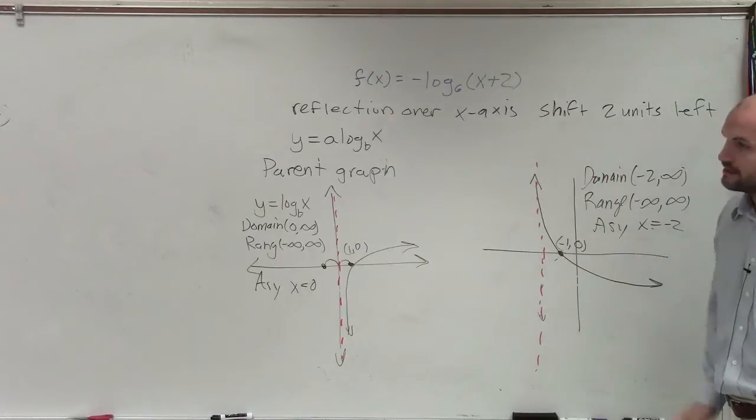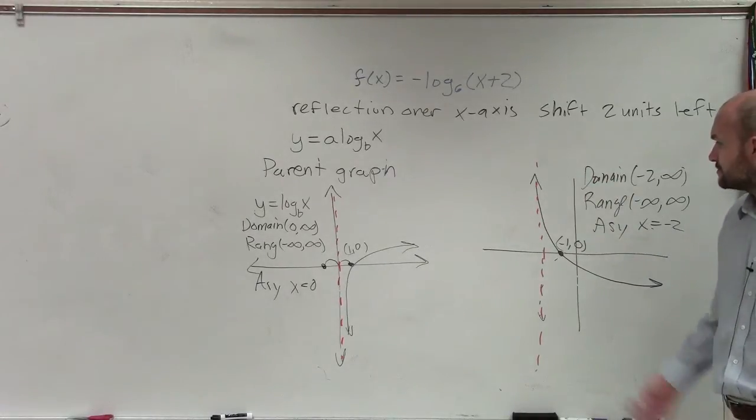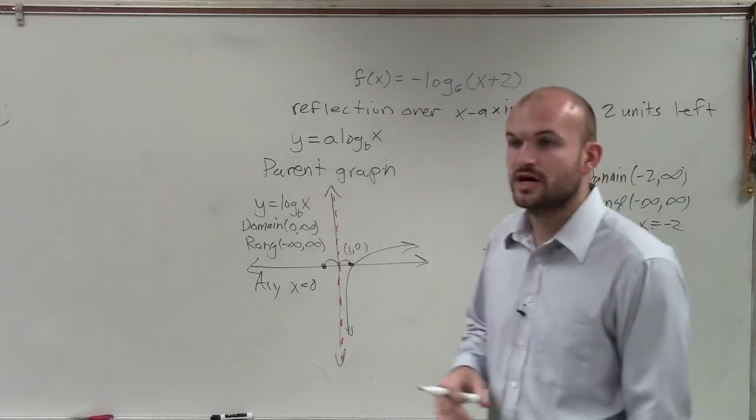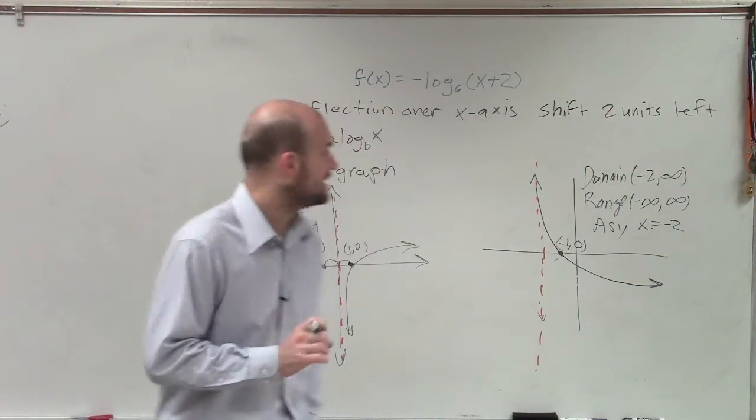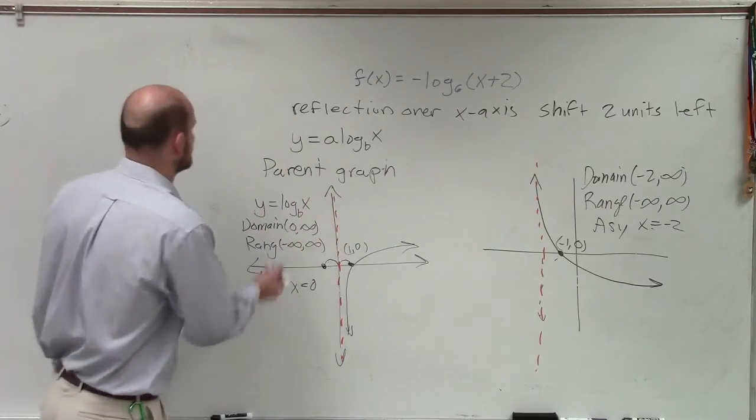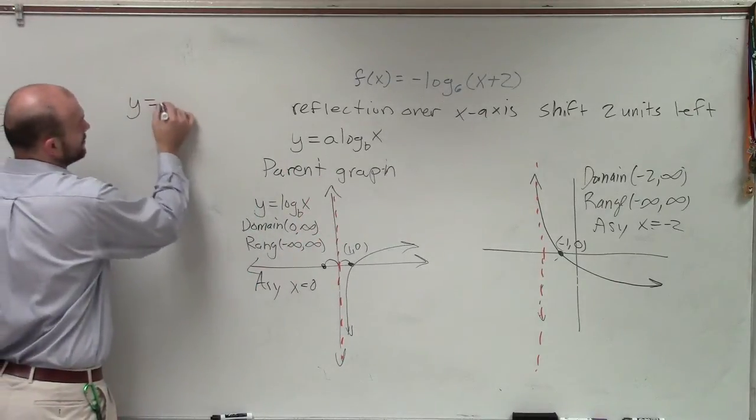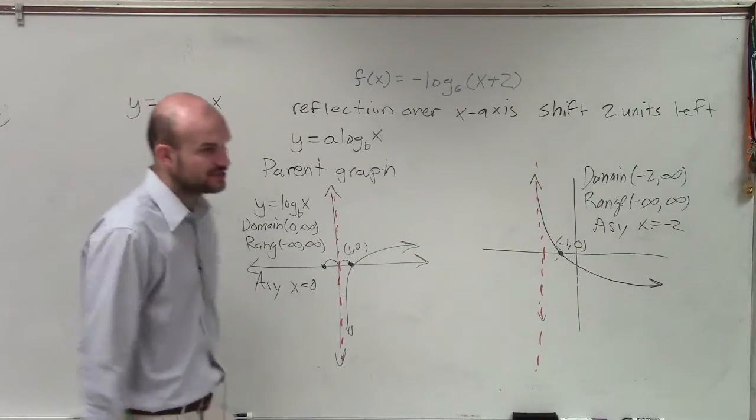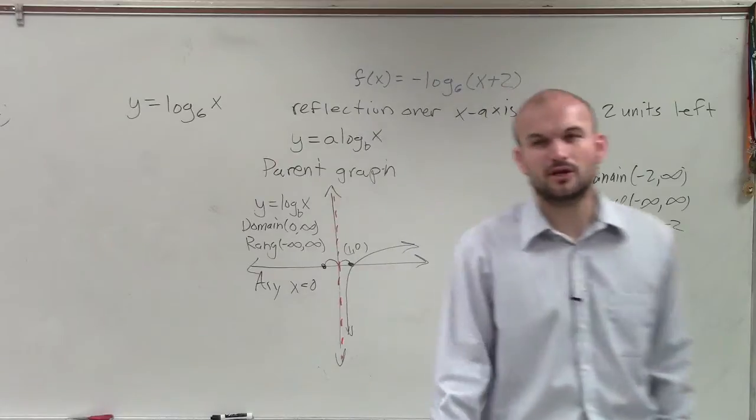So, ladies and gentlemen, that is your asymptote, domain, range, and your graph looking up there. The other thing also to go through is, again, you guys can even look at this and look at another point. And this is exactly what we go through. If I look at y equals log base 6 of x without any transformations, let's go and see if we can determine another point.